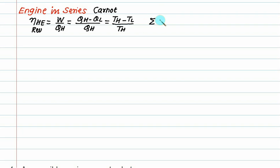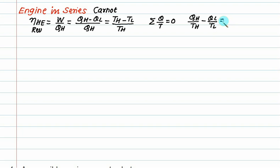Similarly, for a Carnot heat engine we can write the sum of Q over T equals zero. Q_H divided by T_H minus Q_L divided by T_L equals zero. So we can claim that Q_H by T_H is the same as Q_L by T_L.